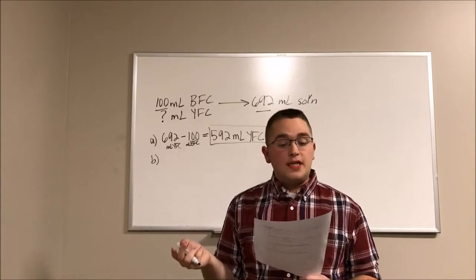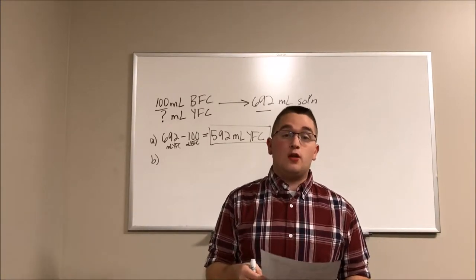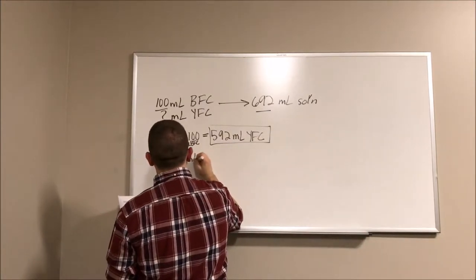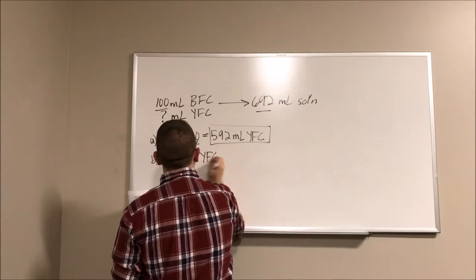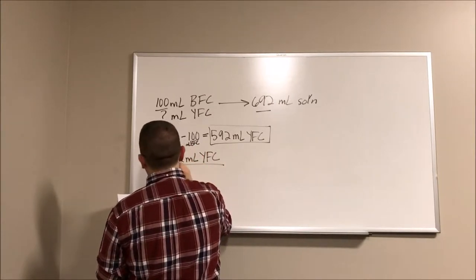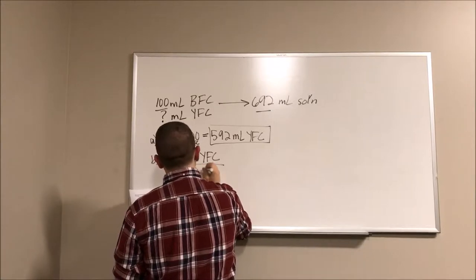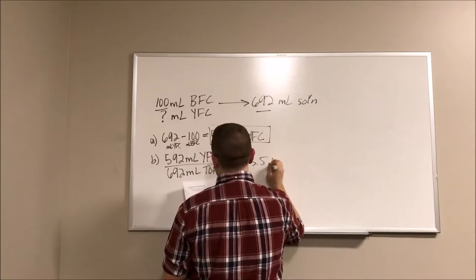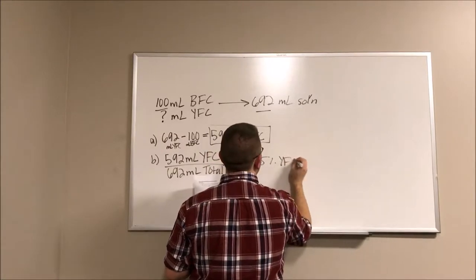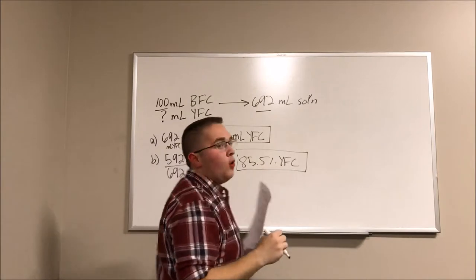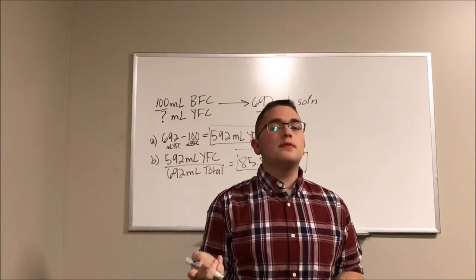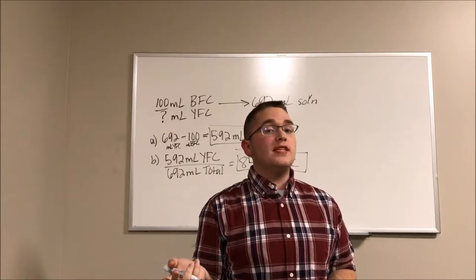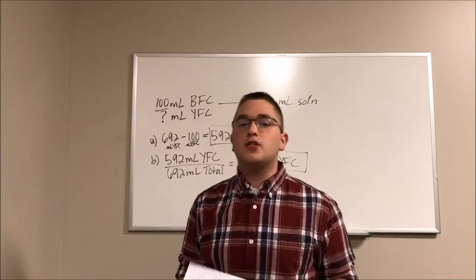Number two, or letter B, what percent of the final solution will be considered yellow food coloring. So we start off with 592 milliliters of yellow food coloring, what we just found. And we can divide it by 692, which is our total to get an 85.5% YFC value. This in chemistry class is sometimes also known as mass comp or mass composition.